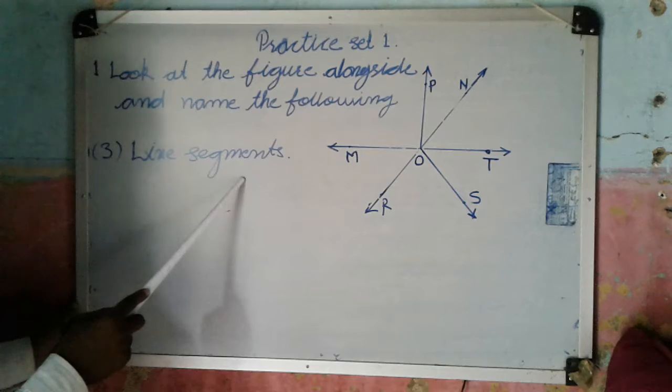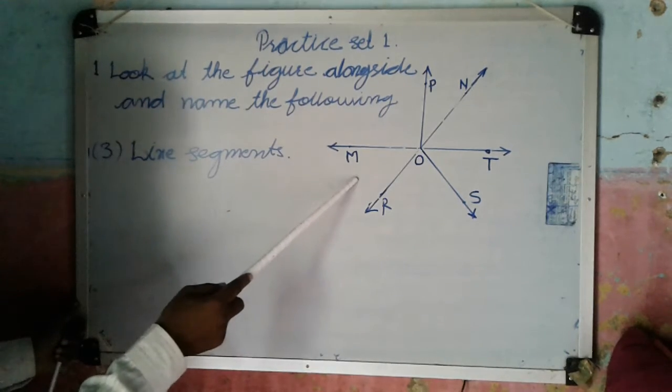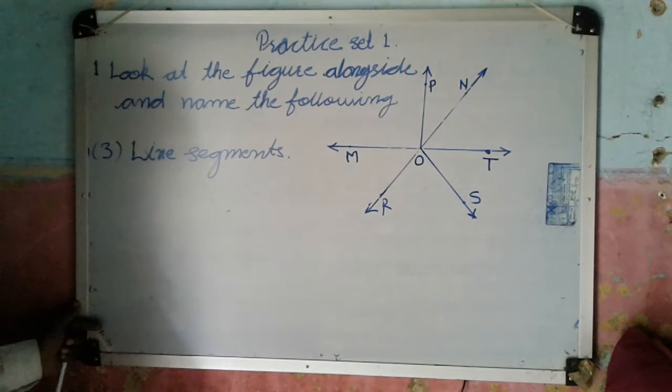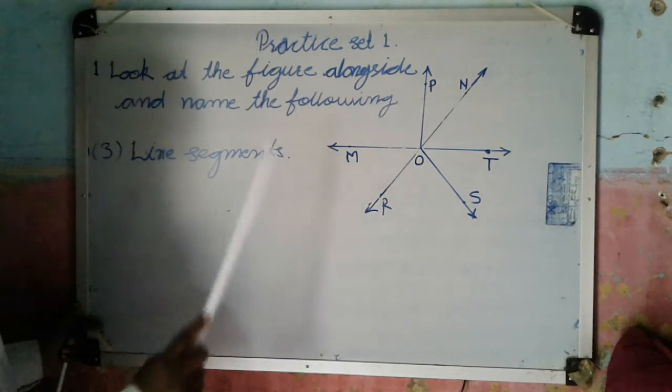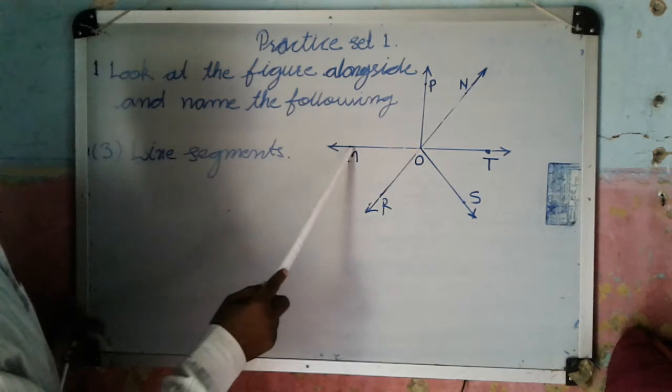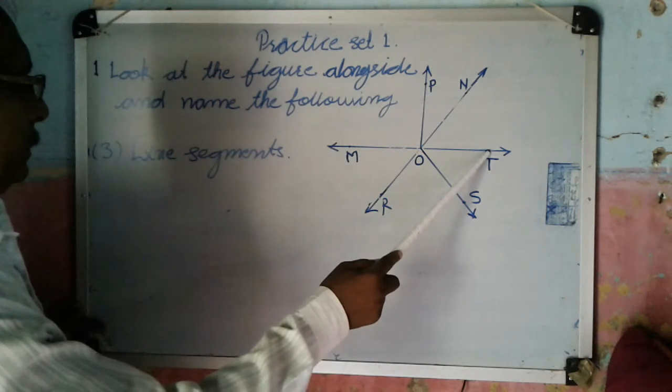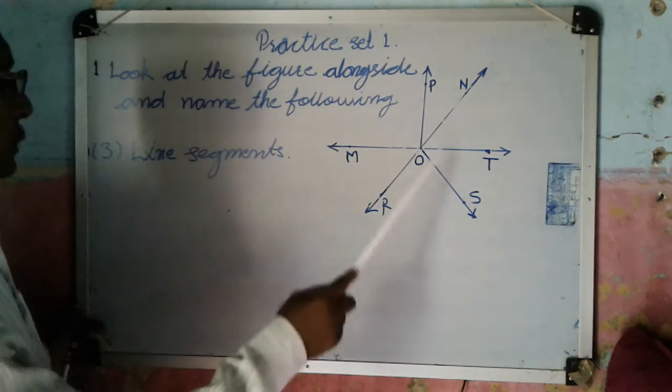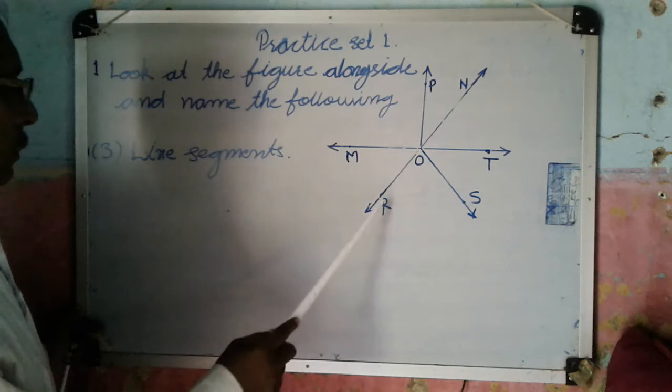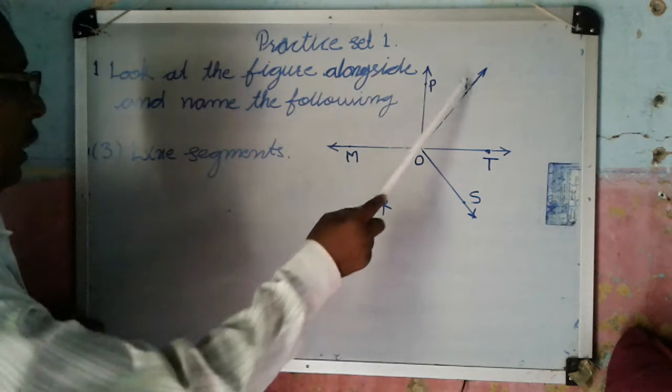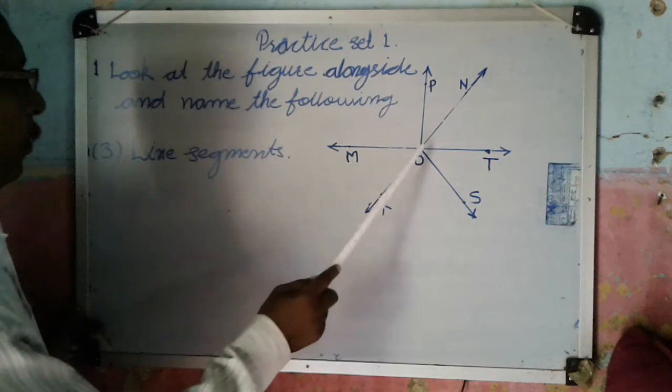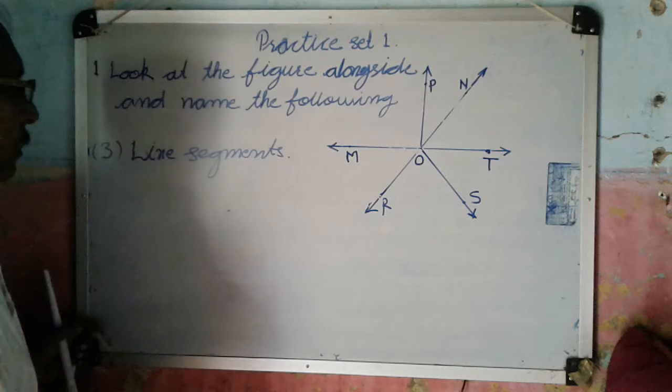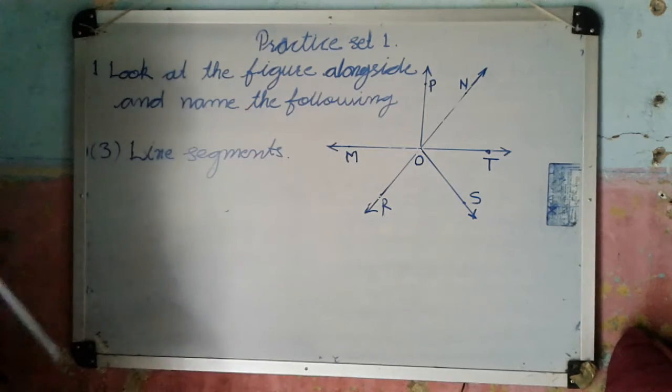Now line segments. So we have to write names of line segments. So in this figure, so many line segments we can observe: line segment MT, line segment MO, line segment OT, line segment RN, RO, ON, OP, OS. All these are line segments.